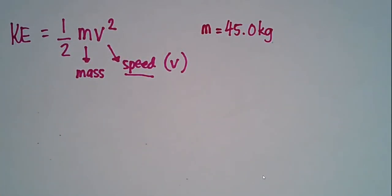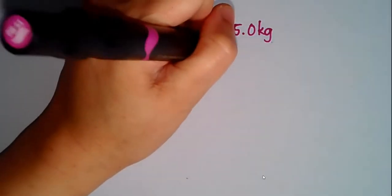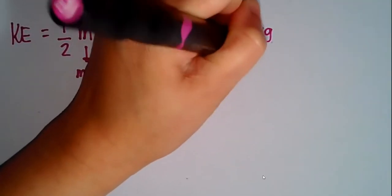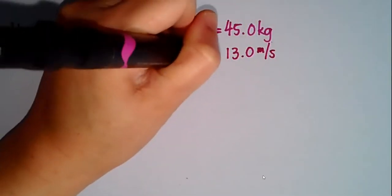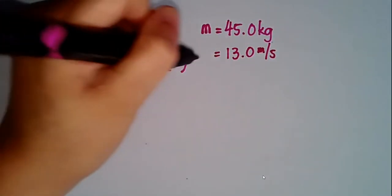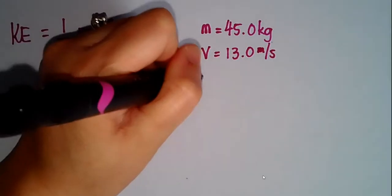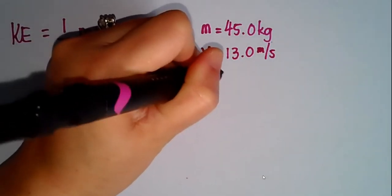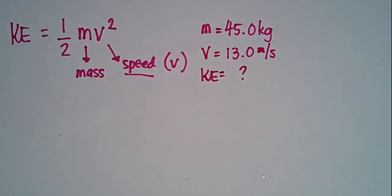And then it is moving at 13 meters per second. I'm going to write down 13 meters per second, and we know that that will be the velocity of the object. Now what is asked is to find the kinetic energy.